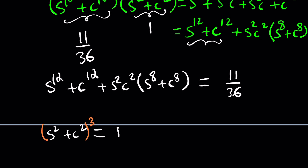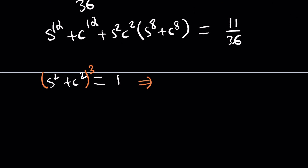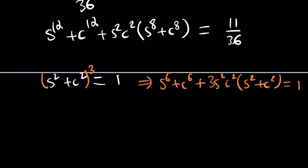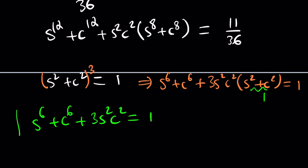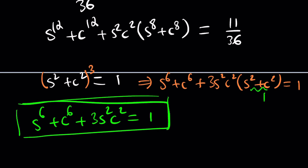Raising s squared plus c squared to the third power equals 1. Expanding using the binomial theorem gives s to the sixth plus c to the sixth, plus 3 s squared c squared times the quantity s squared plus c squared, which equals 1. So we get the identity: s to the sixth plus c to the sixth plus 3 s squared c squared equals 1. Let's save this equation because we'll find it helpful later.